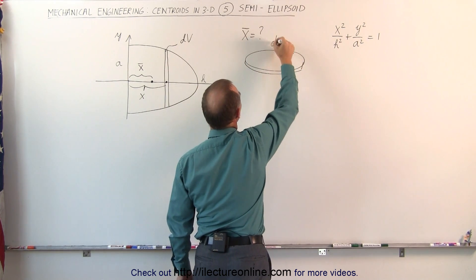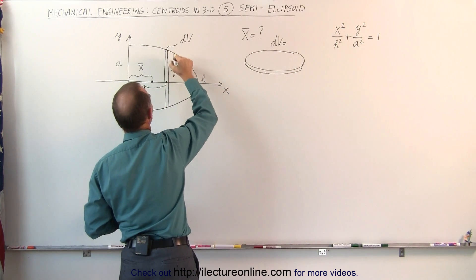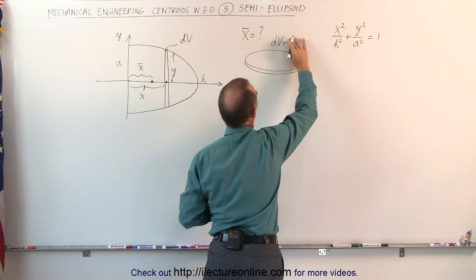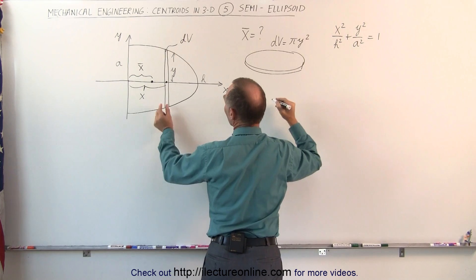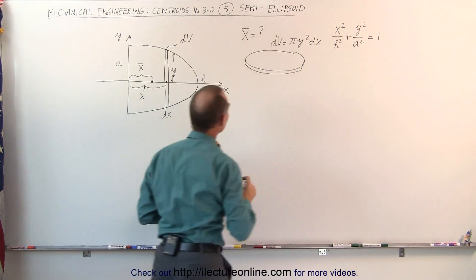Notice that the dv can be found by taking the area of that, and the height of that slice would be equal to y. So that would be equal to y, or let me write it like this, πy² times the thickness, and the thickness is a small little dx, so times dx, that's a small little volume.